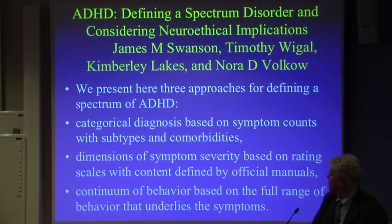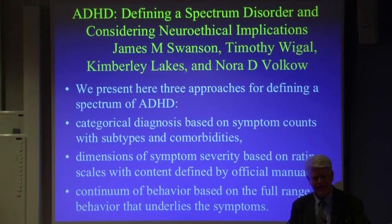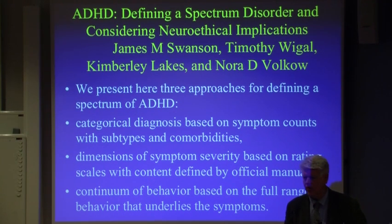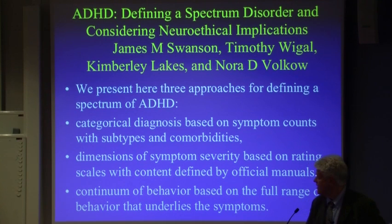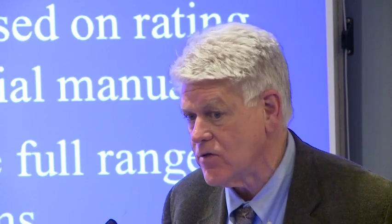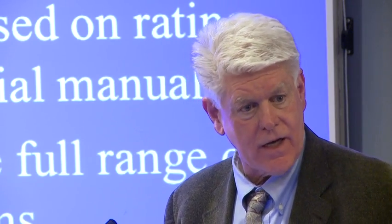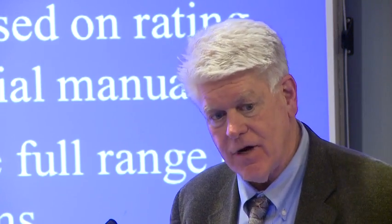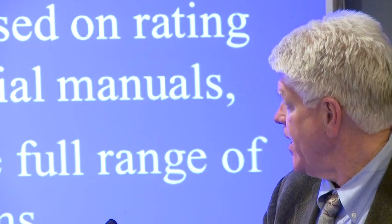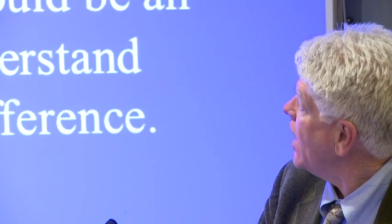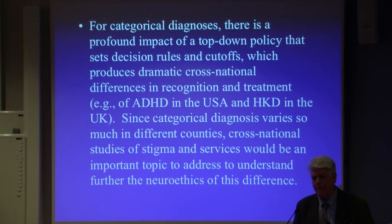A group of us wrote a chapter for this book presenting the concept of ADHD as a spectrum disorder. The autistic spectrum disorder and spectrum disorders for depression or schizophrenia exist, but I'm not sure how many people have applied the spectrum concept to ADHD. We examined the spectrum disorder and the differences between categorical diagnosis, symptom severity as a so-called dimension, and behavior as a dimension that is normally distributed in the population.